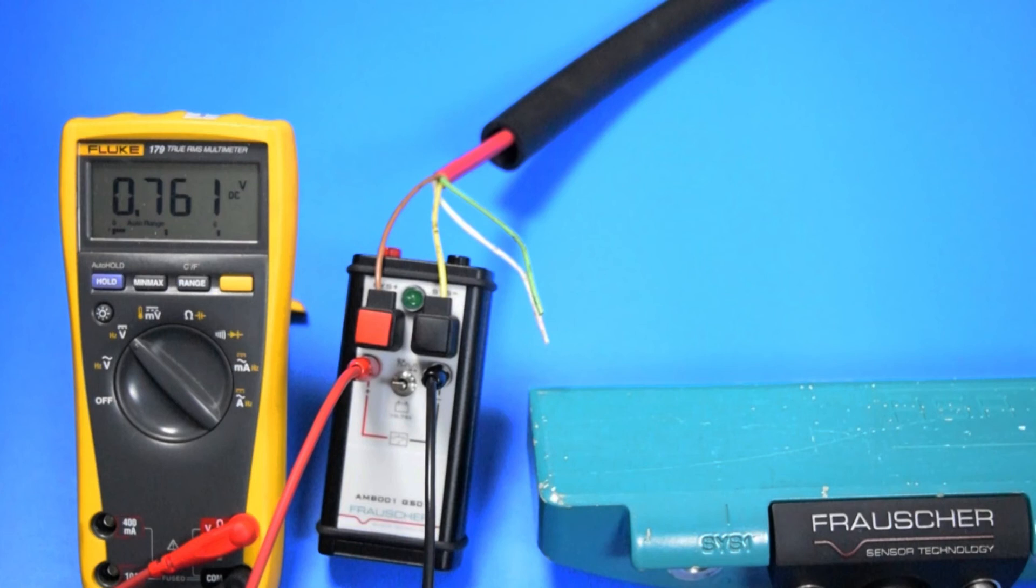Restarting the automated adjustment process is done by removing and reattaching one of the transducer wires going to the AMB.